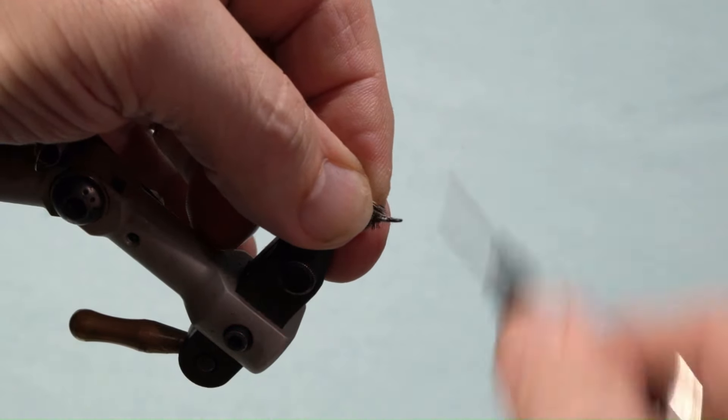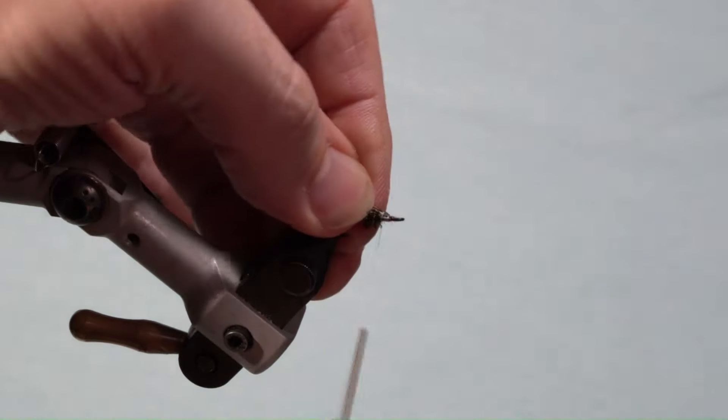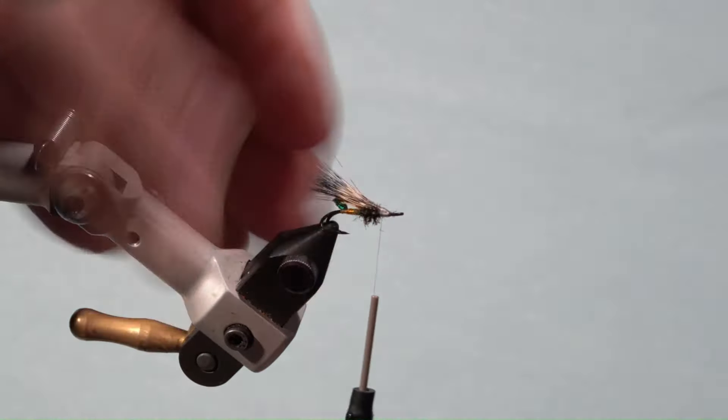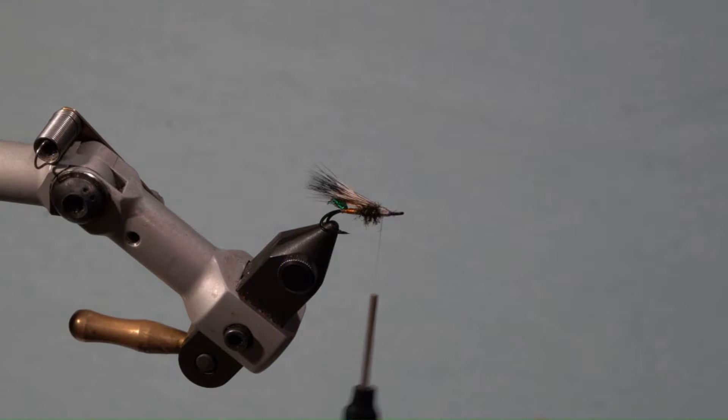Next, trim the fox fur on a slight angle and position it so the bottom is even with the thread. Wrap in small segments at a time until you reach the hurl.